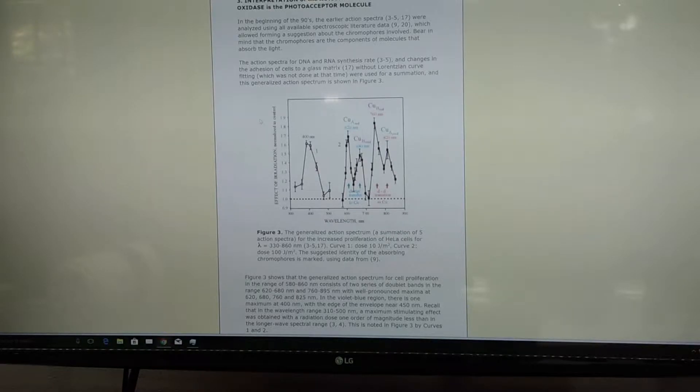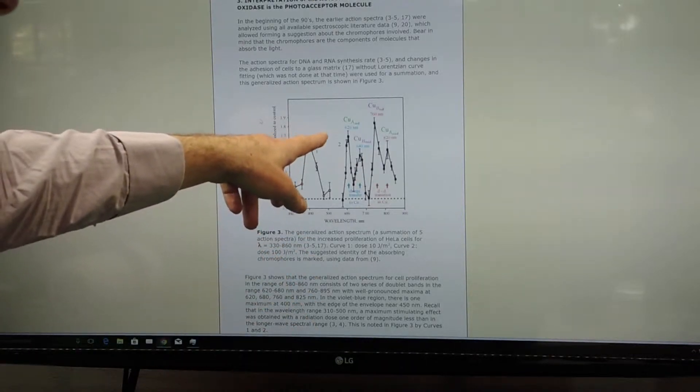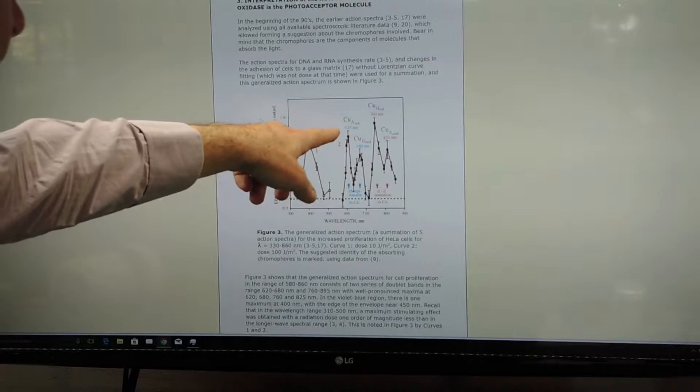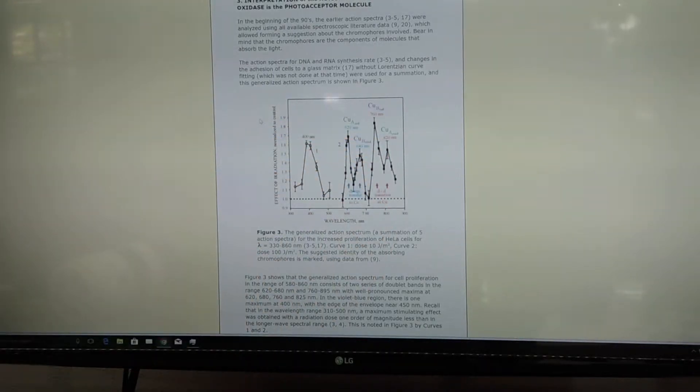Now the interesting part of this research is it kind of tells us what kind of LED or what kind of light spectrum would be ideal, and I use this information to order the LEDs that I have. So I have an LED with combined these four wavelengths: 620, 680, 760, and 820 nanometers in one package.